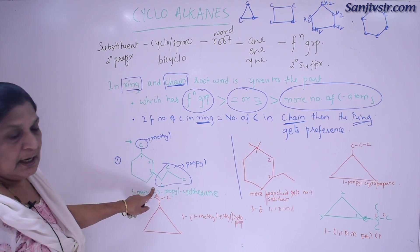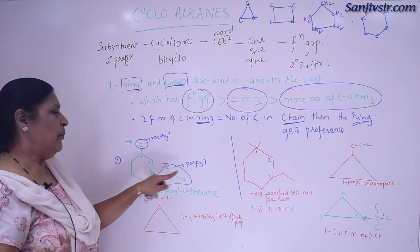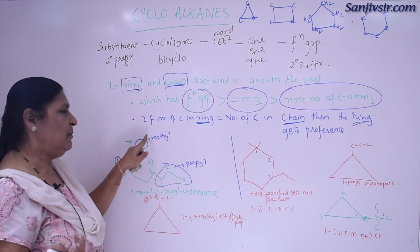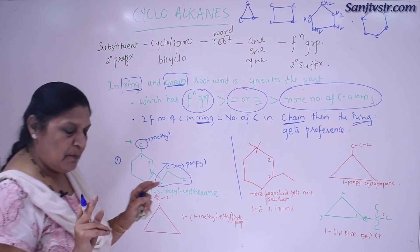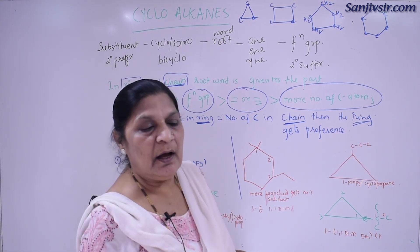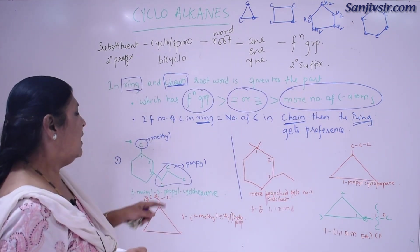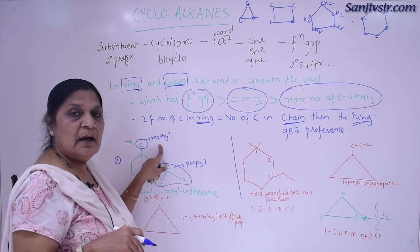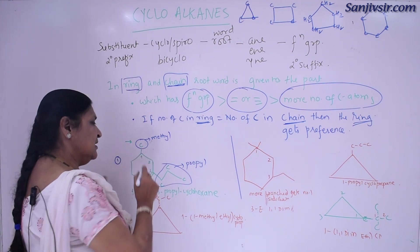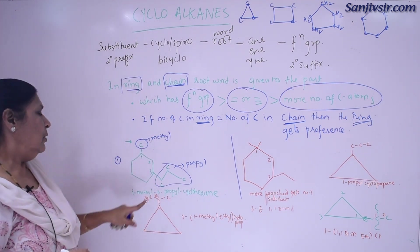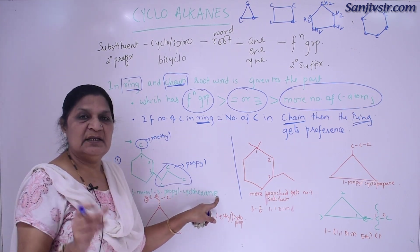You might ask: why not number one, two, three from the other side? If we do that, propyl comes at one and methyl at three. In alphabetical order, when numbering is the same, you give preference to alphabetical order. Alphabetically, methyl comes before propyl — M before P — so we start numbering from the methyl side. Therefore it will be 1-methyl, 3-propyl cyclohexane.